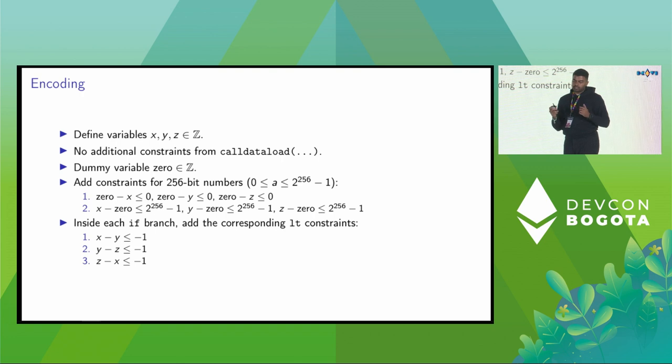Let's think about how to encode the problem now. We have three variables, X, Y, Z, that are integers. We don't have any extra conditions for call data load because we can't really tell anything about it. We add a dummy variable zero, as I said before. Now we add the constraints that these variables are 256-bit numbers, that is zero less than or equal to A less than or equal to the uint max. The first set of constraints are simply saying that X, Y, and Z are positive. The second one would say that X, Y, and Z are bounded by the maximum value of uint 256. And inside the if branch, in the first branch, you can add the first constraint, X minus Y less than or equal to minus one. Inside the second if branch, we can add the constraint, Y minus Z less than or equal to minus one. The third one, we can add a similar one, Z minus X less than or equal to minus one.